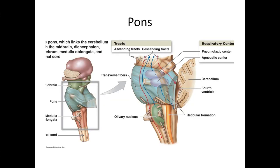Moving up, we have the pons. A lot of this is ascending and descending tracts — just signals moving through. We also have some respiratory controls here: the pneumotaxic center and the apneustic center. Anytime you see that 'pneumo,' you should be thinking about lungs and breathing. So this is about breathing control, but we're mostly seeing signals going directly through, either up or down.